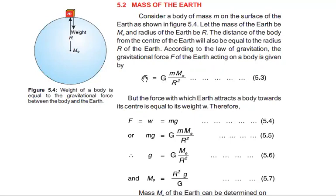So we replace F with mg in the equation. Here we have mg equals G m Me over r².